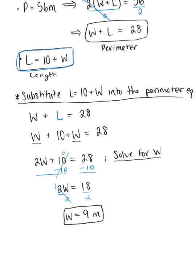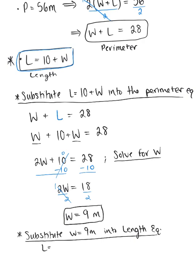Now we'll substitute this back into our length equation to find the missing dimension. Substituting W = 9 meters into our length equation: L = 10 + 9 = 19 meters.